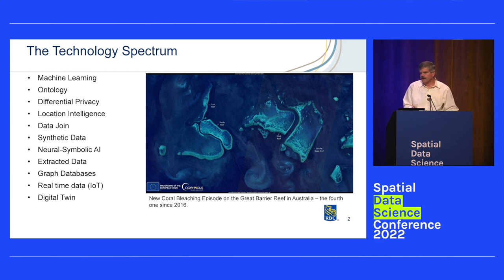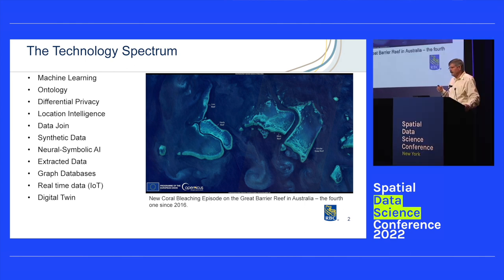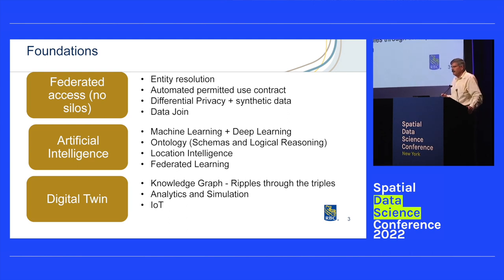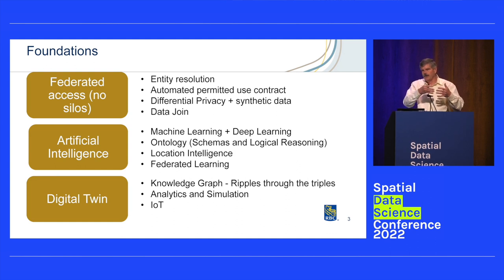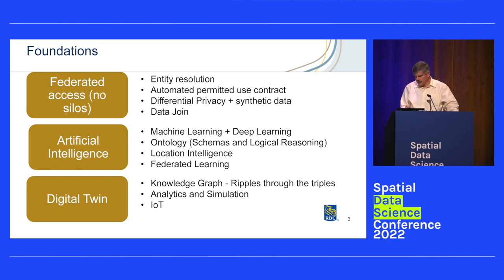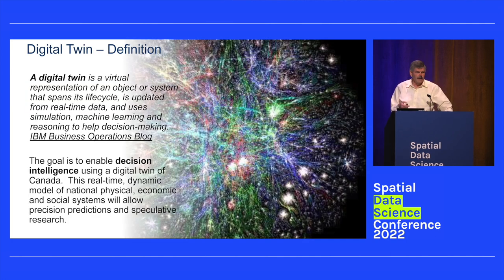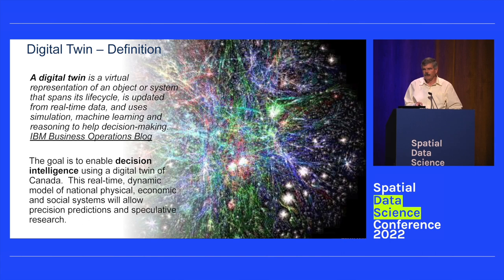I'll go straight to graph databases because that's a foundational element of our technology called the digital twin. These are the foundation elements that make up the digital twin. Federated access is basically a mechanism within the bank where massive storage facilities are linked together, so we don't copy the data around unless we absolutely have to — we federate that data instead. It's my belief, and actually the bank's belief as well, that this digital twin technology is going to be fundamental and foundational to our spatial exercises in the future.